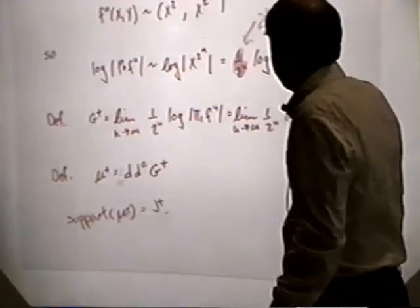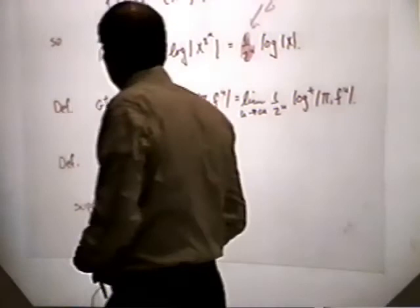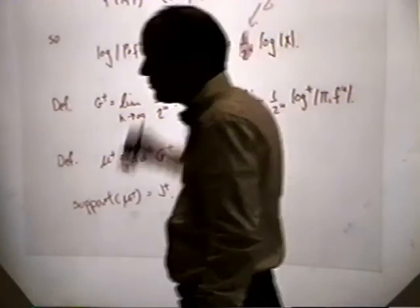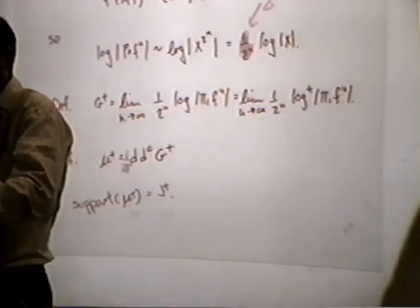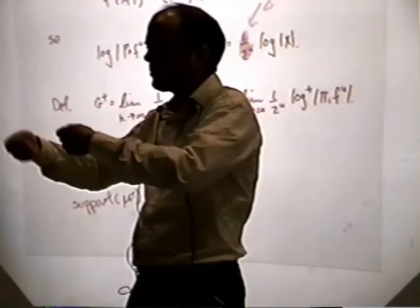In fact, these potential functions do converge. We'll define the function G plus to be the limit of these properly normalized potential functions. Then G plus is itself the potential function of some current, and that current is mu plus, just defined by that statement. The punchline is that these varieties will converge in the sense of currents to this current mu plus. So we've managed to create convergence of varieties by a system which is ignoring the small-scale structure — the folds are there but they're not getting in our way.